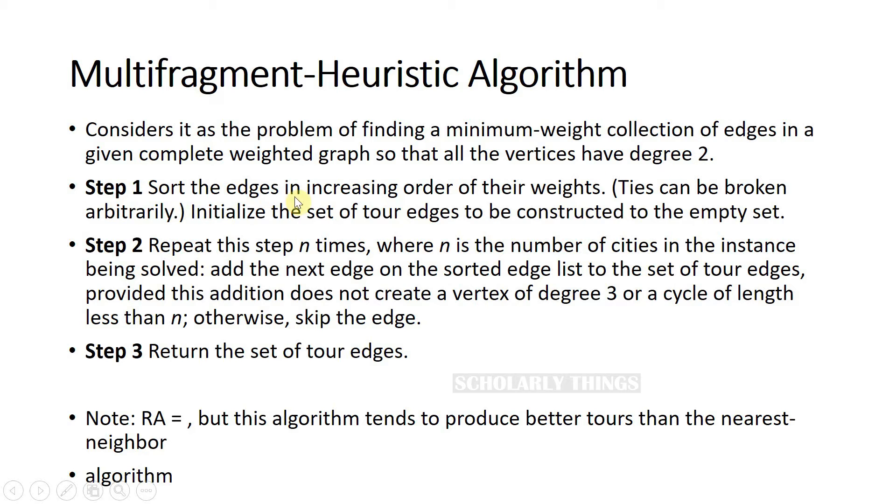In step one, sort the edges in increasing order of their weights. Initialize the set of tour edges to be constructed to the empty set. Step two, repeat the step n times, where n is the number of cities in the instance being solved. Add the next edge on the sorted edge list to the set of tour edges, provided this addition does not create a vertex of degree three or a cycle of length less than n. Otherwise skip the edge. Step three, return the set of tour edges. This algorithm is similar to the one we saw previously.